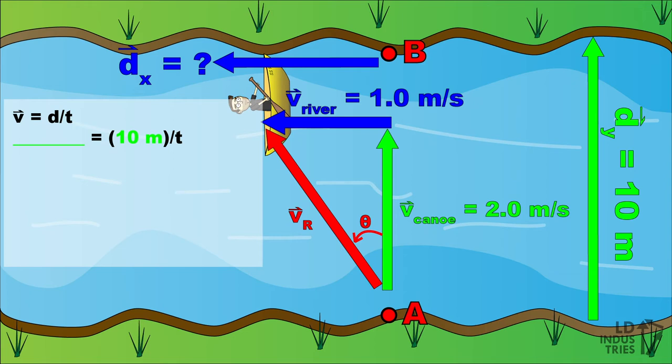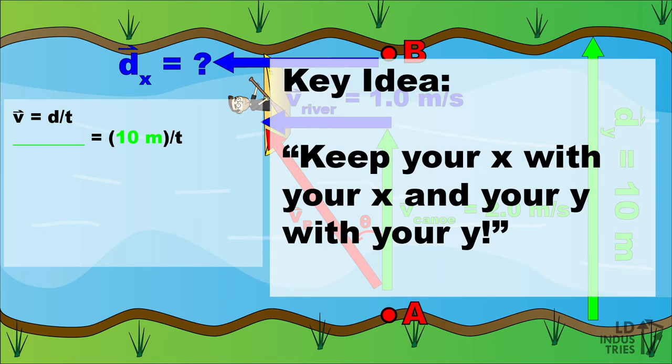There's a key idea here that helps you work this out. When you're working with kinematics formulas, you need to substitute in X vectors with other X vectors, and Y vectors with other Y vectors. Or, as I often say in class, keep your X with your X, and your Y with your Y.